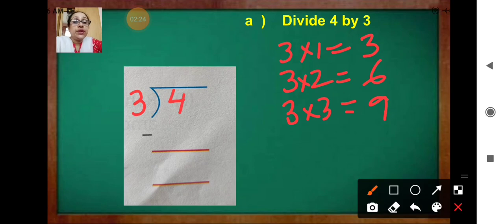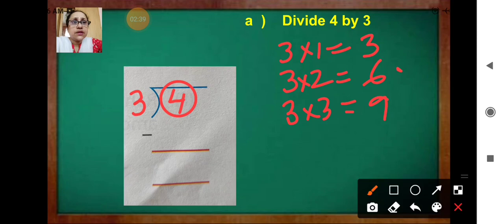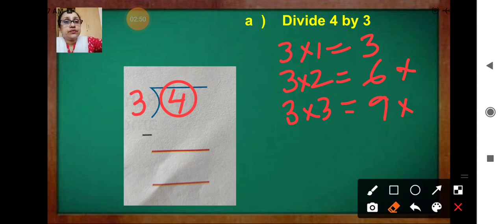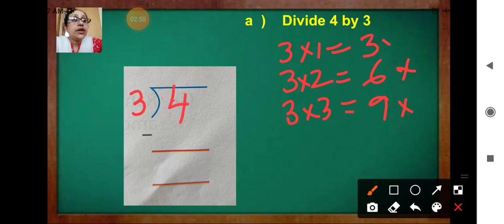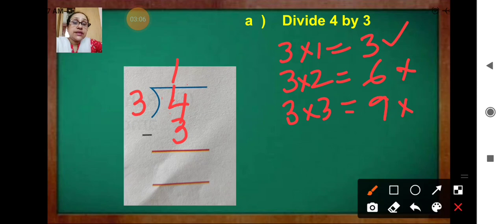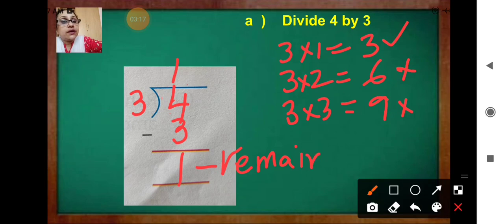So, what we have to do? Take the number which is very close to four. Three twos are six — no, it is bigger than four. Three threes are nine — nine is also bigger than four. So we can take three ones are three. Write one and three here, because three is close to four. Now, four minus three equals one. This one is remaining.